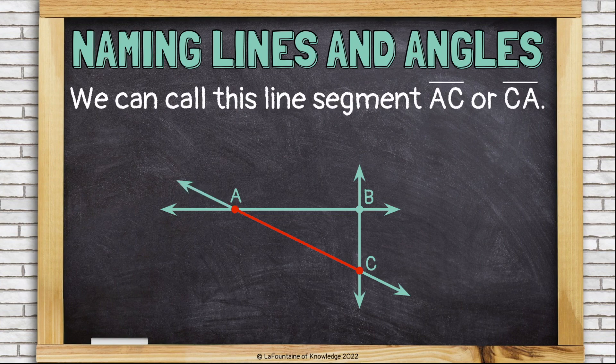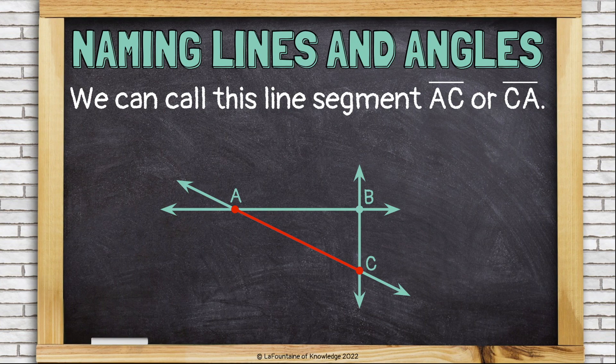We can call this line segment AC or line segment CA. Notice the symbol for line segment doesn't have any arrows. It's just a line.